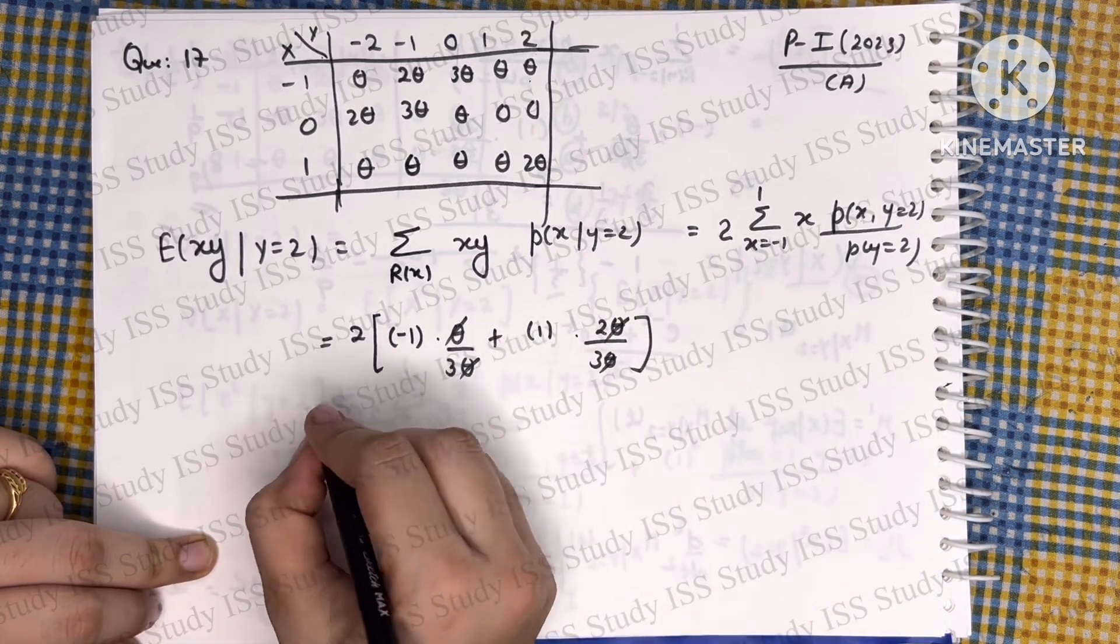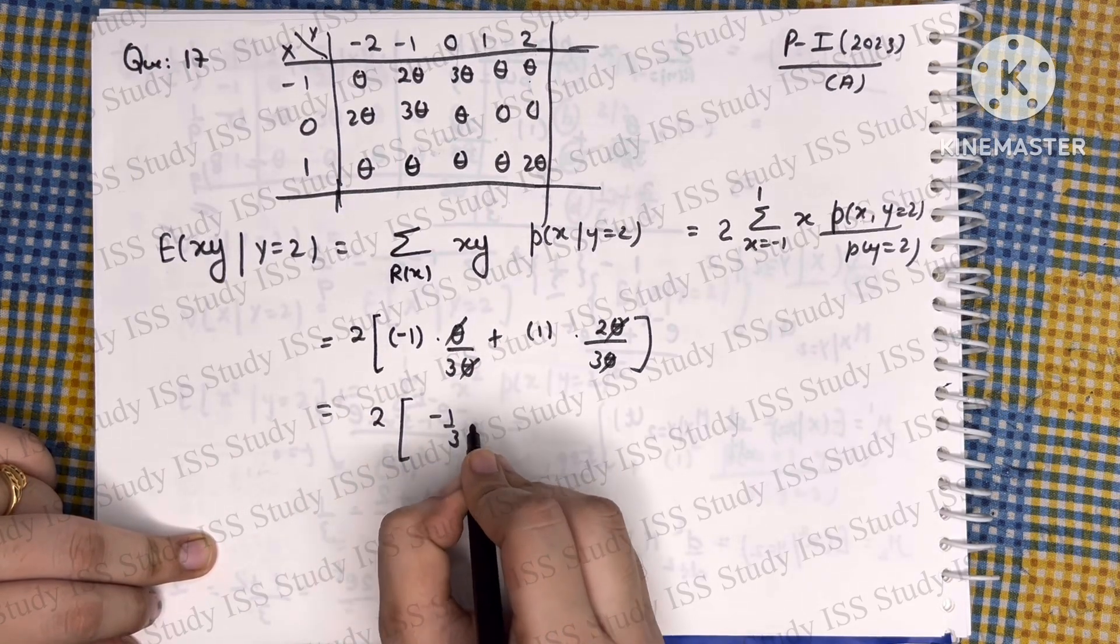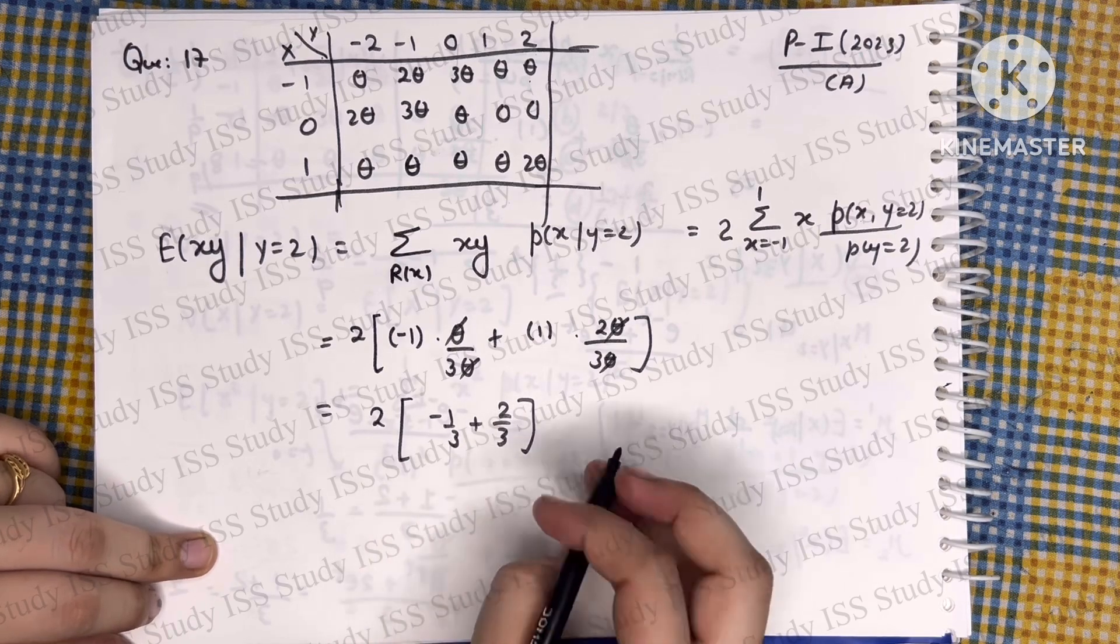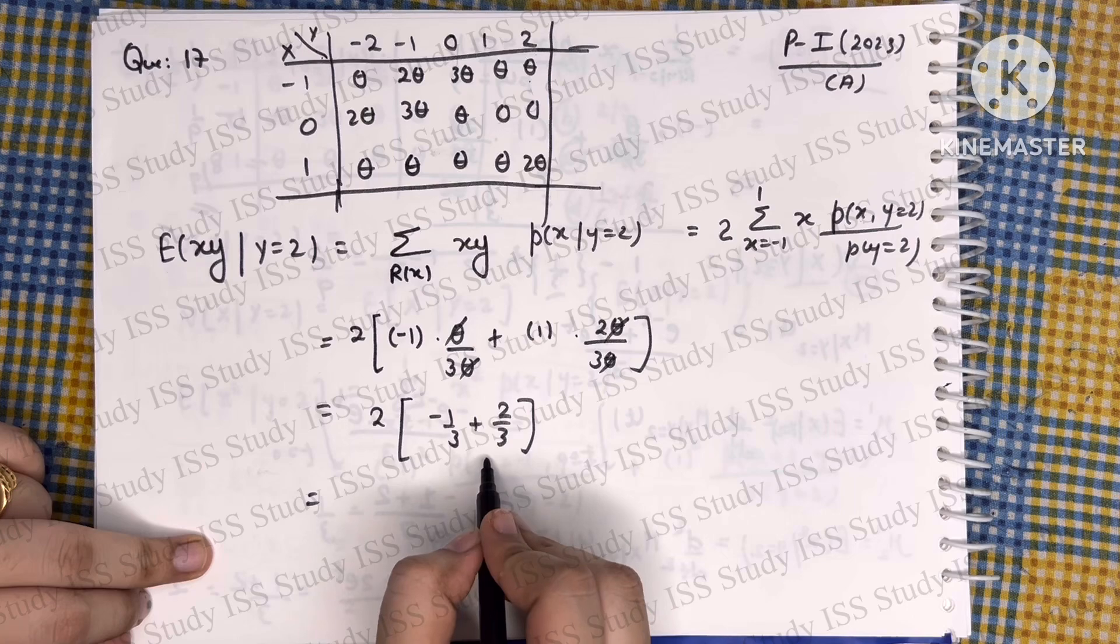Cancelling out, we have 2 times (minus 1/3 plus 2/3). Now it is very easy to calculate. 2 minus 1 is 1, so we have 2/3.